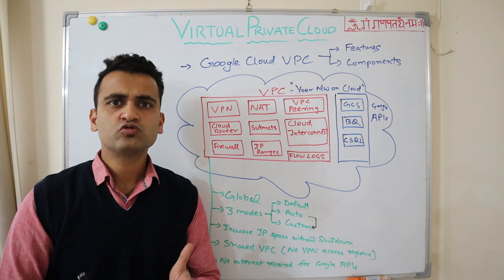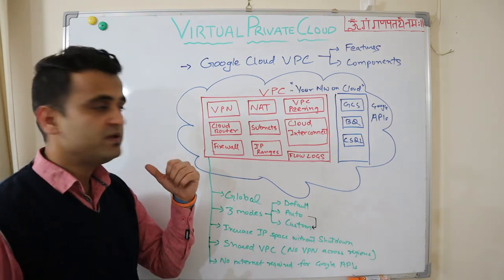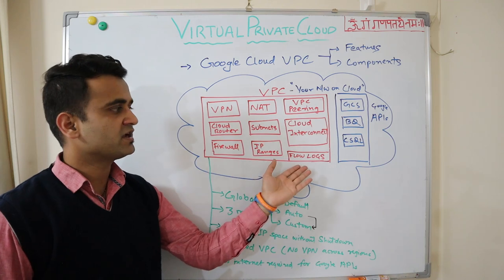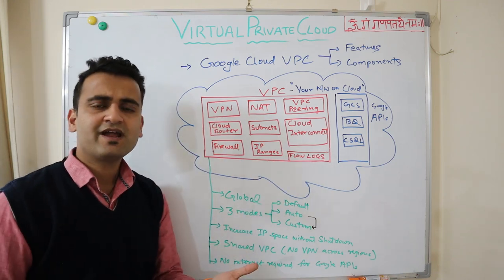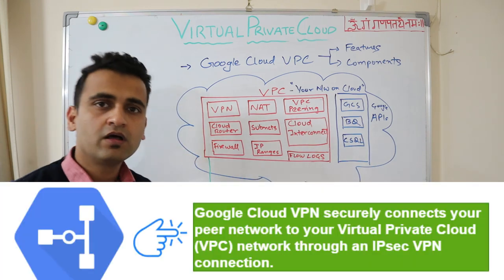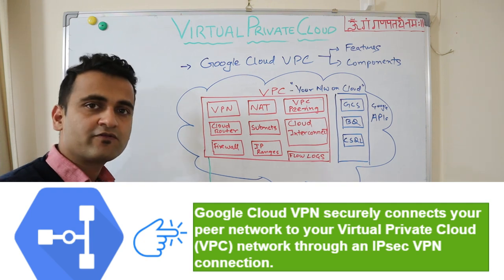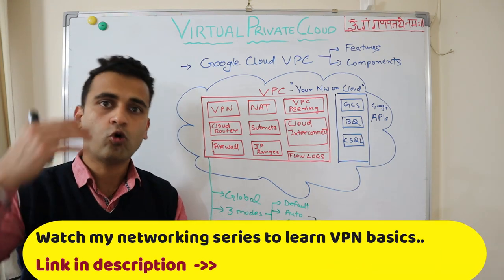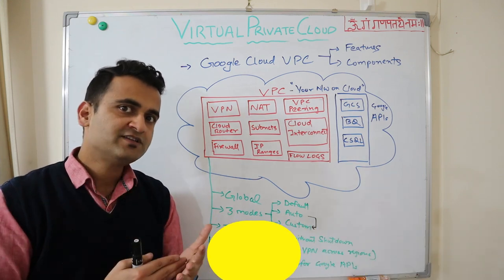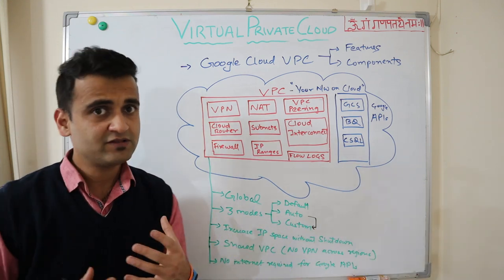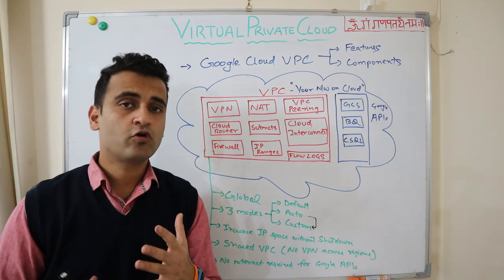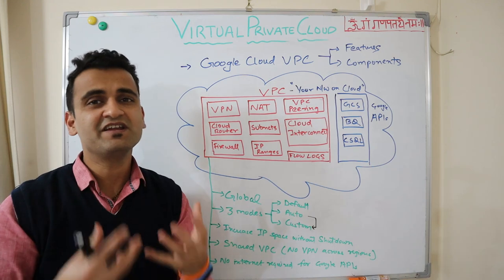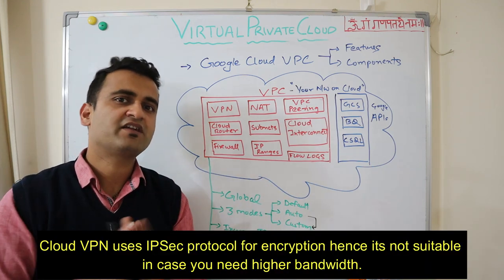Let's understand the key components of Google Cloud VPC and some important features: Cloud VPN, Cloud Router, Firewall, NAT, Subnets, IP ranges, VPC Peering, Cloud Interconnect, and Flow Logs. VPN is used to establish connectivity with your on-prem data center. If you want to connect one server from your data center to your cloud VM, you can use VPN, and it will establish a tunnel over the internet to provide that connectivity.